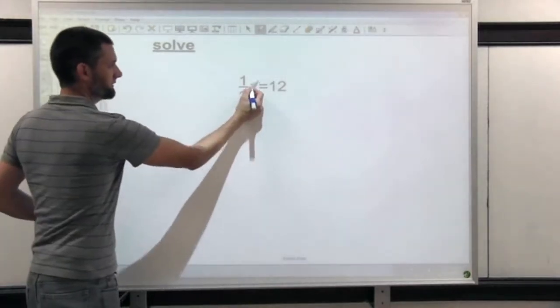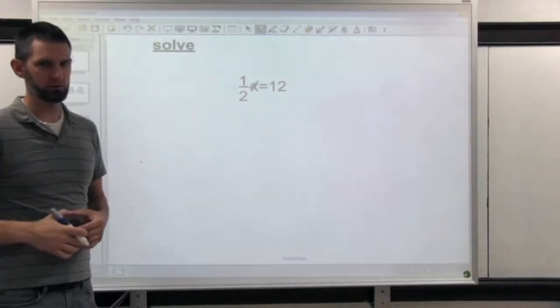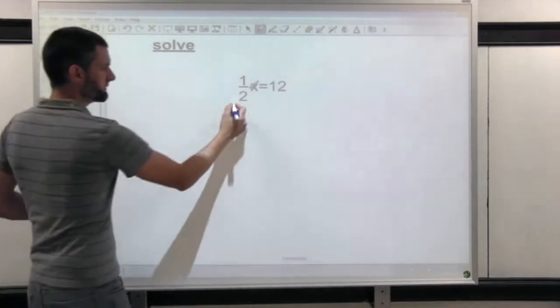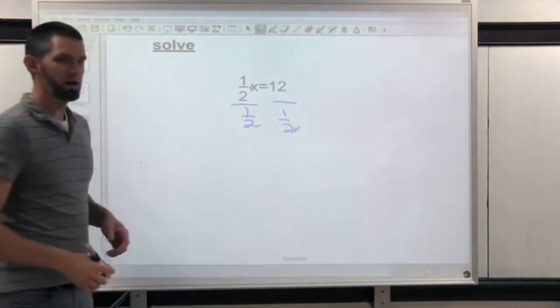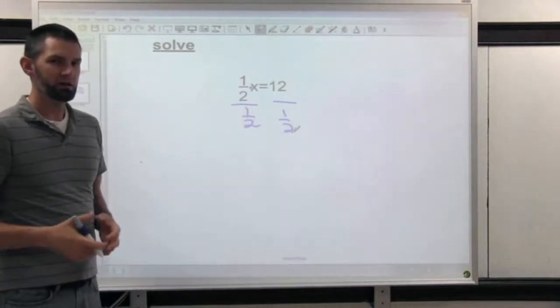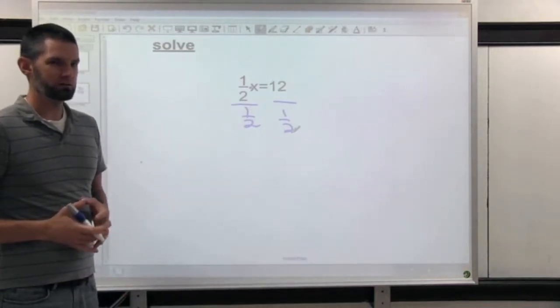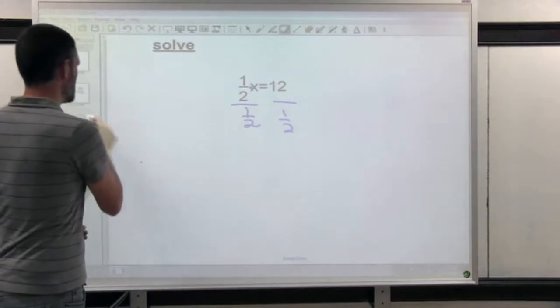It's got a fraction in front. Now you can change the fraction to a decimal, if that makes it easier for you. You could even divide, because that's the opposite, by one-half, but twelve divided by half is a little more complicated at times. So here's one other way to do that.